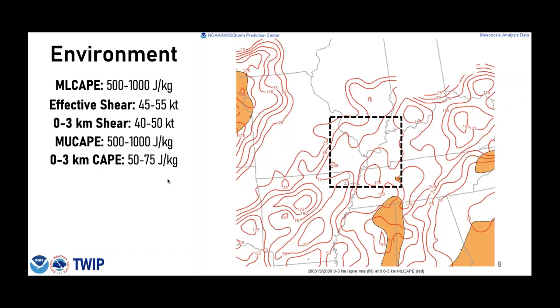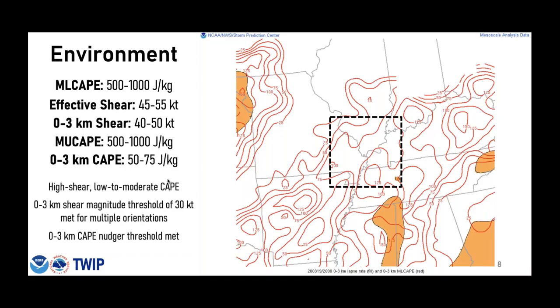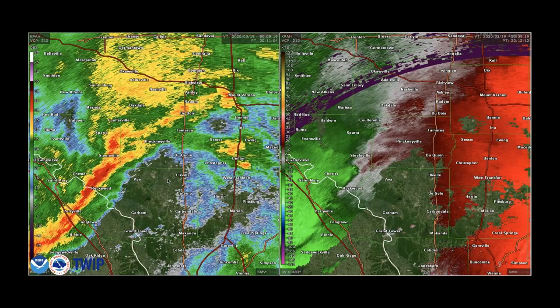MuCAPE was similar to mixed-layer CAPE, so convection was likely surface-based. The low-level CAPE, or 0-to-3 kilometer CAPE, was about 50 to 75 joules per kilogram. Taking that all together, we're dealing with a generally low-to-moderate CAPE and high-shear environment. The 0-to-3 kilometer shear vector magnitude threshold of 30 knots would be pretty easily met, and the 0-to-3 kilometer CAPE nudger threshold of 40 joules per kilogram is also exceeded. The environment looks pretty favorable for potential mesovortex and tornado genesis.